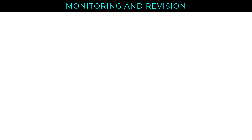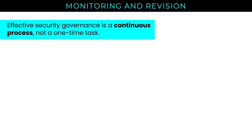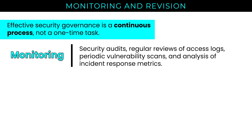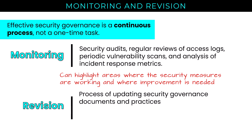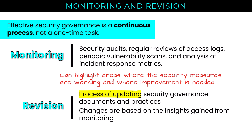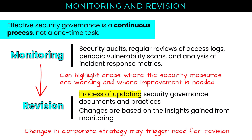Moving on to monitoring and revision. Effective security governance is a continuous process, not a one-time task — it's continuous oversight. Monitoring can take multiple forms, including security audits, regular reviews of access logs, periodic vulnerability scans, and analysis of incident response metrics. This can highlight areas where security measures are working and where improvement is needed. Revision is the process of updating security governance documents and practices based on insights gained from monitoring. Changes in corporate strategy may also trigger the need for revision.